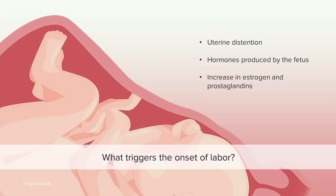The next trigger has to do with estrogen and prostaglandins — two hormones that are secreted. If you remember from the menstrual cycle lecture, prostaglandins lead to uterine contractions, and they do the same thing here. Finally, a decrease in the level of progesterone also triggers contractions, just as it does in the menstrual cycle.